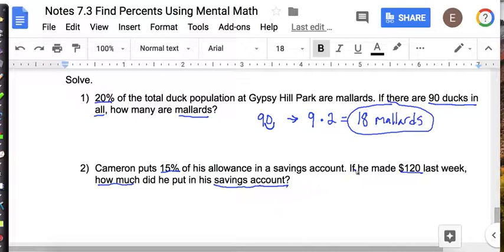Okay. So we need to take 120 and do our 10% trick. So that gives me 12. Now that's only 10%. I have to do 15%. So remember, I have to take half of 12. And what's half of 12? 6. And now I add those two together. 12 plus 6 is $18.